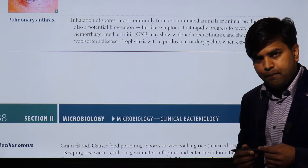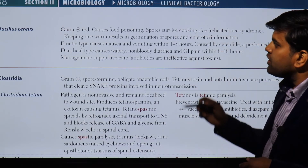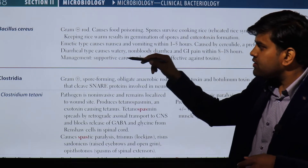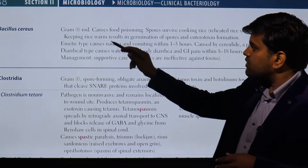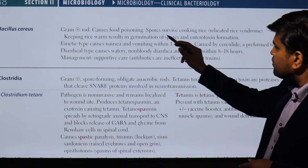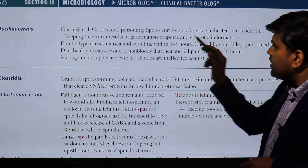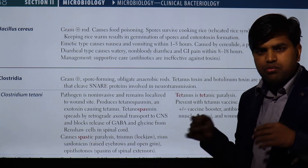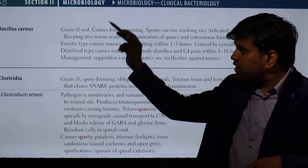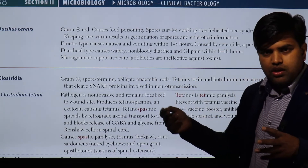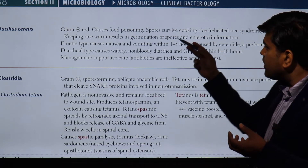Now moving to Bacillus cereus — another species in the Bacillus genus. While Bacillus anthracis causes cutaneous and pulmonary anthrax, Bacillus cereus is mainly responsible for food poisoning. It is a gram-positive spore-forming bacterium. The classic scenario is reheated fried rice from a restaurant. The food becomes contaminated with Bacillus cereus, which produces spores.